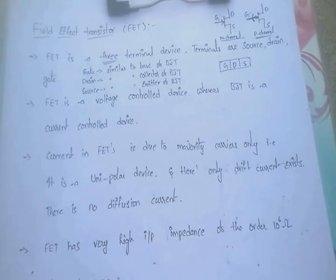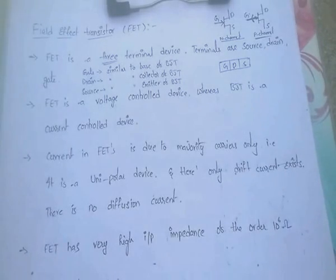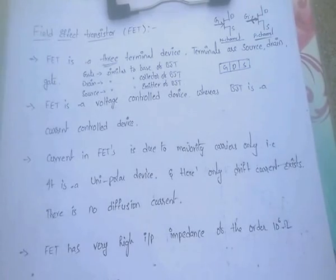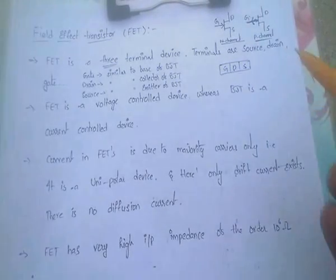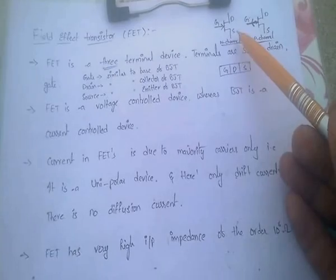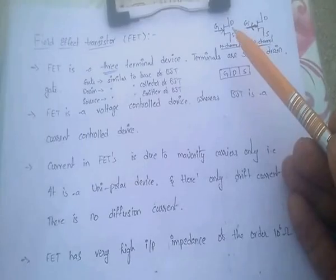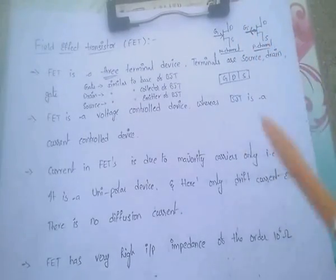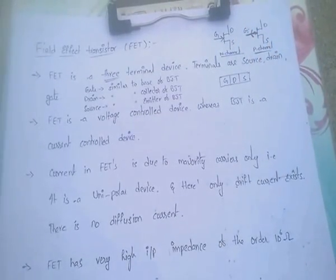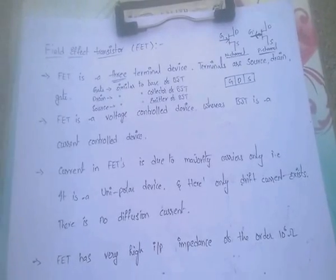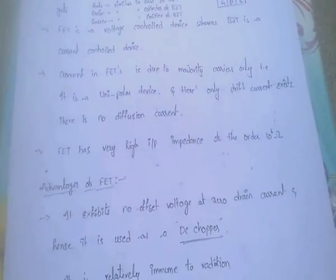To recap: FET is a 3-terminal device — Gate, Drain, Source. Gate is similar to the Base of BJT, Drain to the Collector, Source to the Emitter. FET is a Voltage Controlled Device. Current is due to Majority Carriers only, so it is a Unipolar Device with only Drift Current and high input impedance of 10 power 6 Ohms.